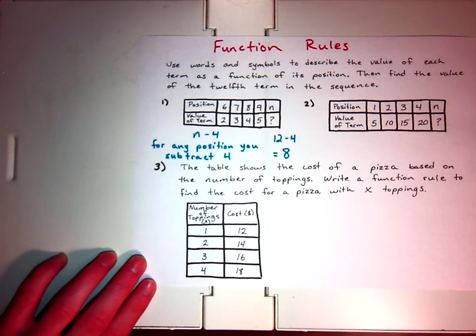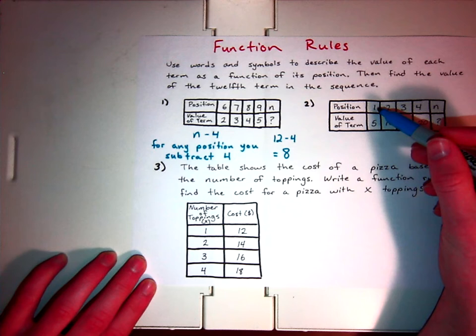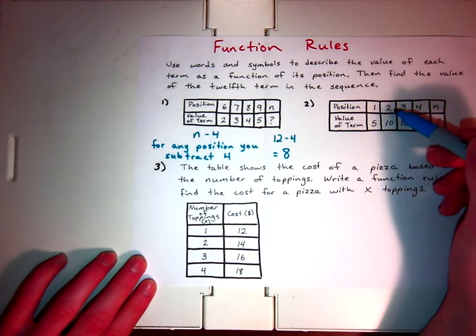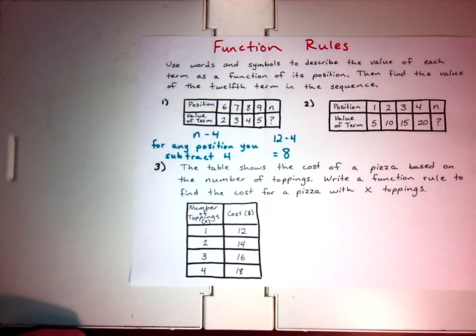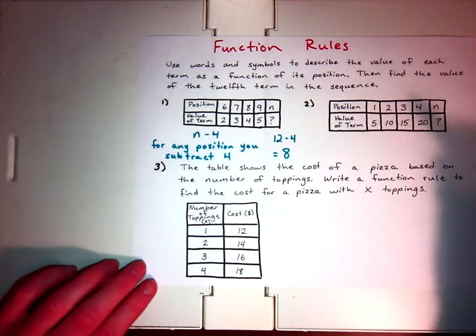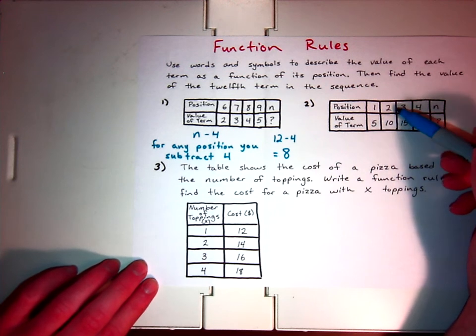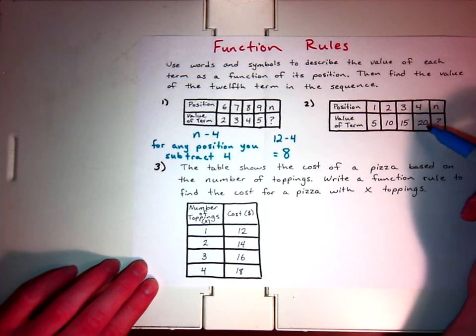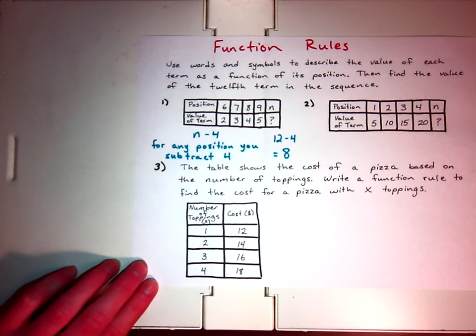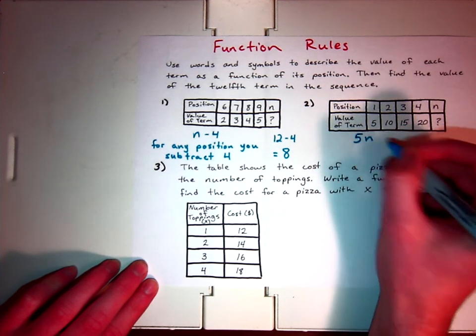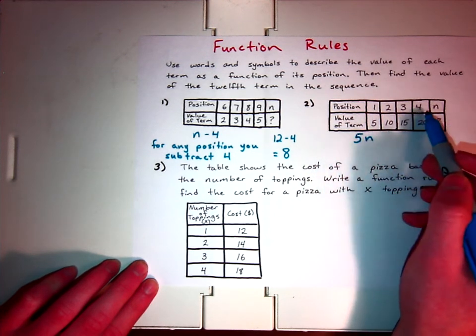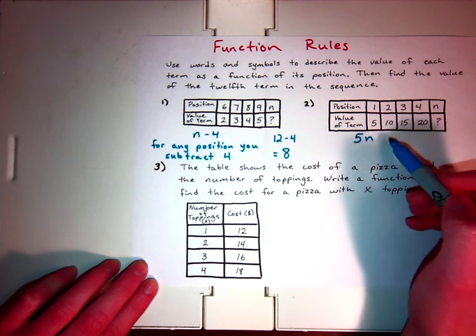For this next one, this one added four. The position was one, it added four. The position was two, and it added eight. The position was three, it added 12. So this one, it's not consistent on when it's adding. But you might notice that one times five is five. Two times five is ten. Three times five is fifteen. So in this one, our expression wouldn't be n plus something, or n minus something. This one is going to be five times n. So whatever value I pick for the position, I just need to multiply by five, and that will give me the value of the term.